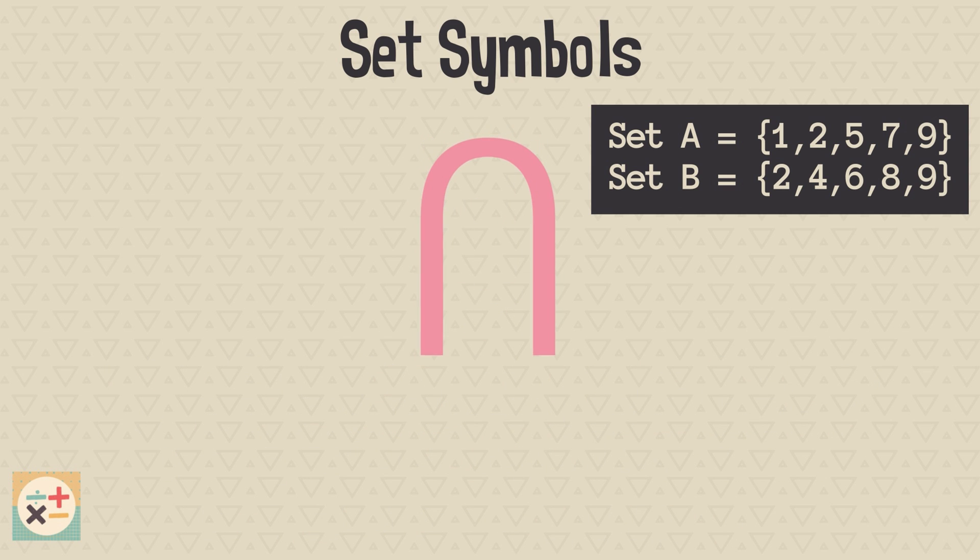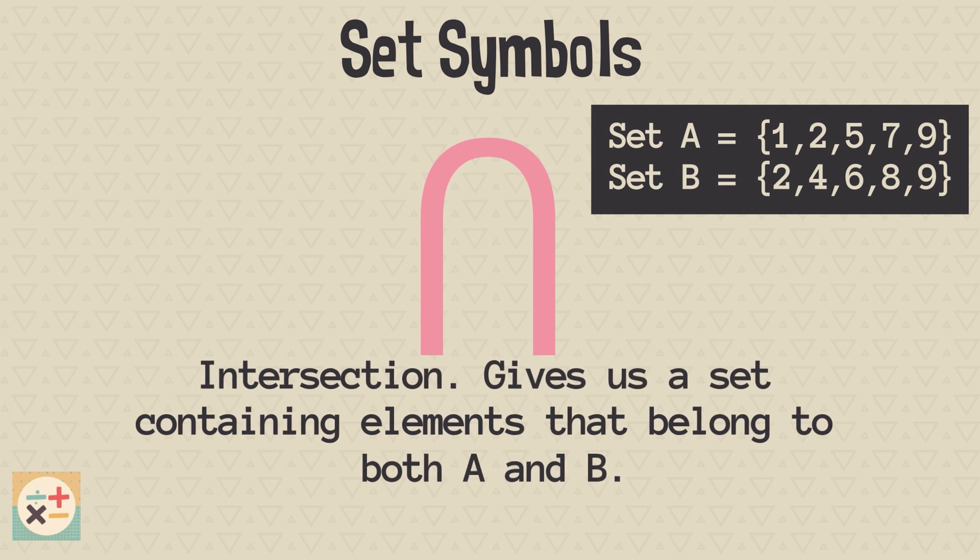On the other hand, this symbol indicates intersection. It gives us a set containing elements that belong to both A and B. In other words, the elements occur in both sets. In this example, the elements 2 and 9 occur in both sets, and therefore are an intersection of A and B.